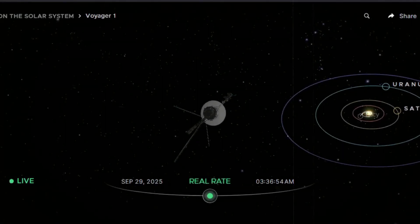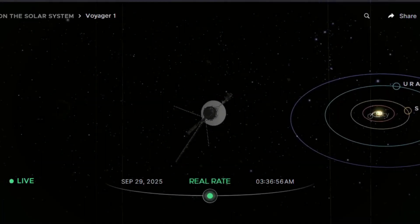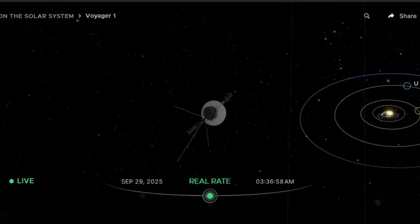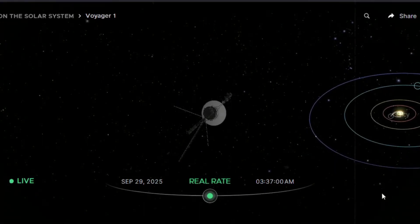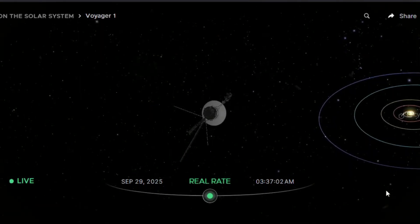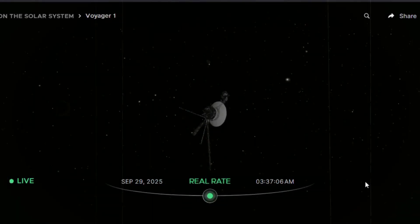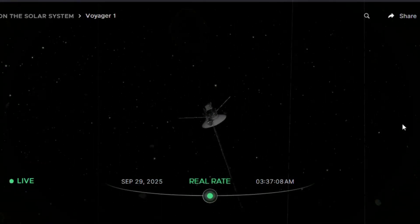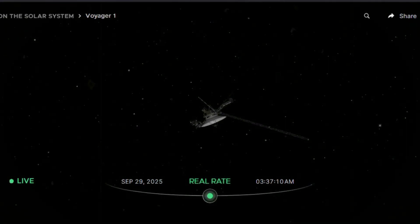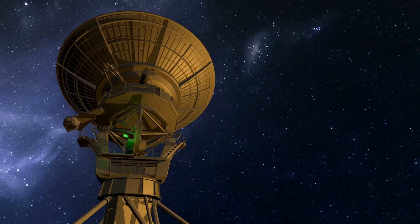The Milky Way itself is only about 100,000 light-years in diameter. A structure ten times larger is not just big, it is absurd. It challenges the very framework of how galaxies form, how energy travels through intergalactic space, and how matter arranges itself across the cosmic web.